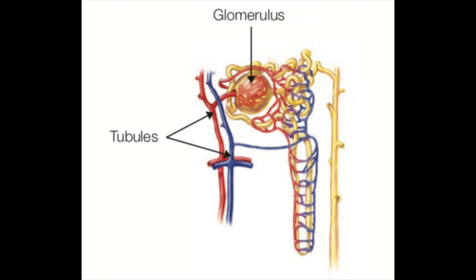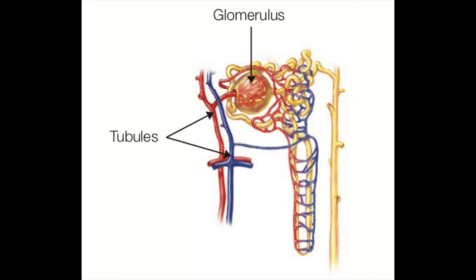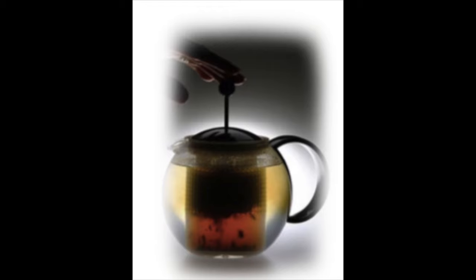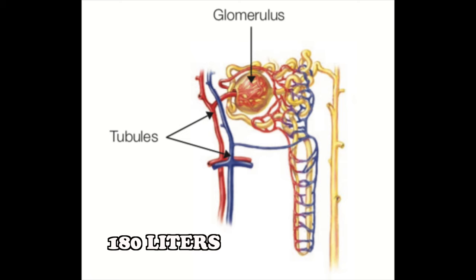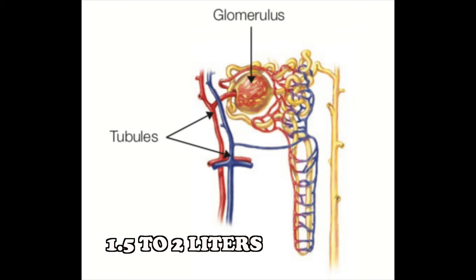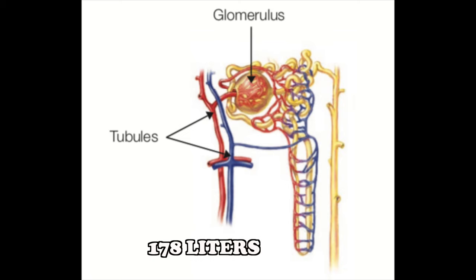Blood leaves the kidney via the renal vein and is returned to the heart via the inferior vena cava. The glomerulus consists of a group of cells with selective permeability — it is a semi-permeable membrane. Selective permeability means certain substances will cross the membrane and others will not. The kidneys produce approximately 180 liters of filtrate per day. Only 1.5 to 2 liters are excreted as urine; the remaining 178 liters remain in the body as recycled body water.